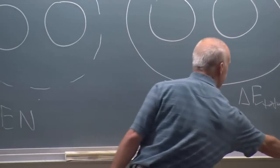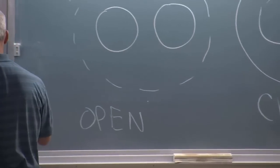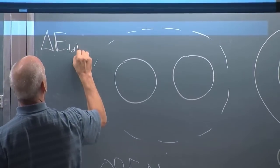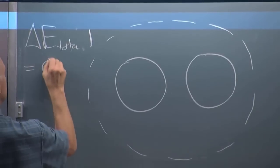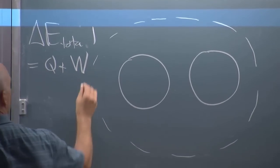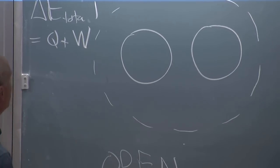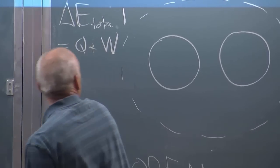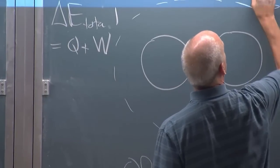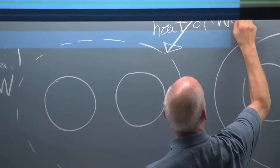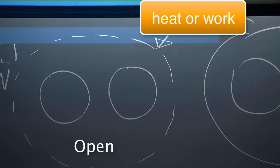For an open system delta E can change because of energy transfers, two kinds of energy transfers we're going to name. Heat is an energy transfer and work is another energy transfer. I showed you both of these with the bowling ball.